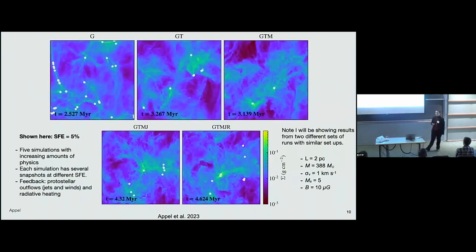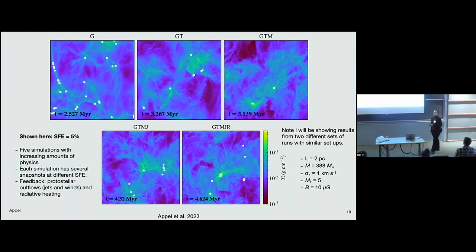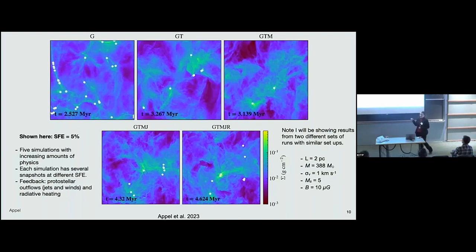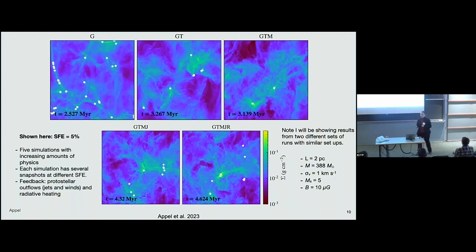Now let me present the simulations I'm using to test this analytic model and examine the gas dynamics. These are two-parsec turbulent box simulations. I'll show results from two different sets of simulations, but they're set up very similarly. I have one simulation that includes only self-gravity, so the gas collapses without anything resisting it. I then add in continuously driven turbulence, magnetic fields, and protostellar outflows or jets and winds. The last simulation also includes a little bit of radiative feedback — in this mass regime, this is really just protostellar heating. We don't form any massive stars in these simulations, so there's no ionization.